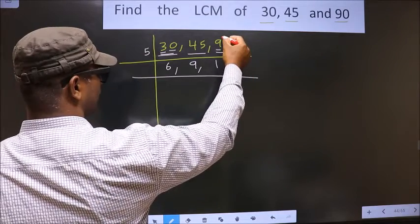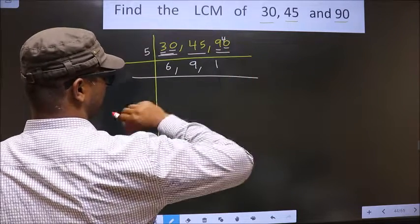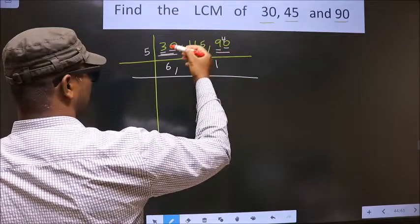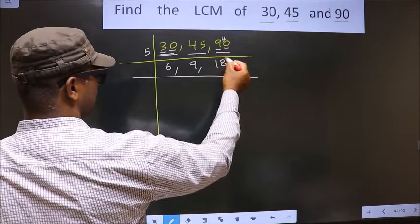9 minus 5 is 4, 4 carried forward making it 40. When do we get 40 in 5 table? 5, 8 is 40.